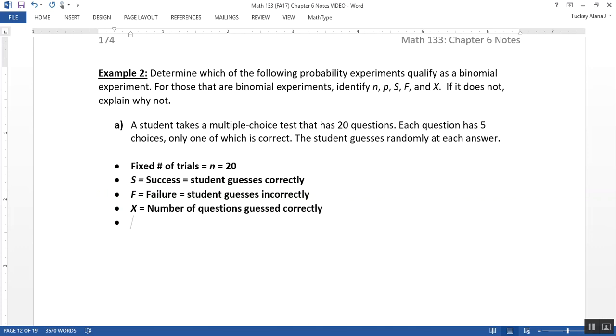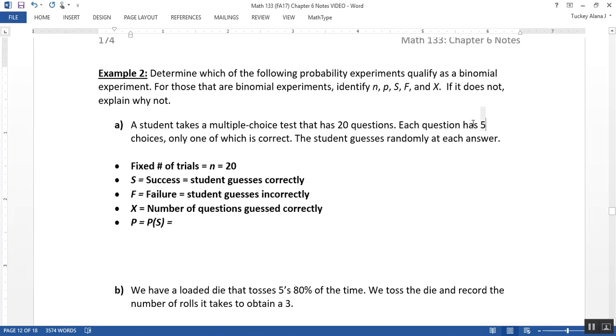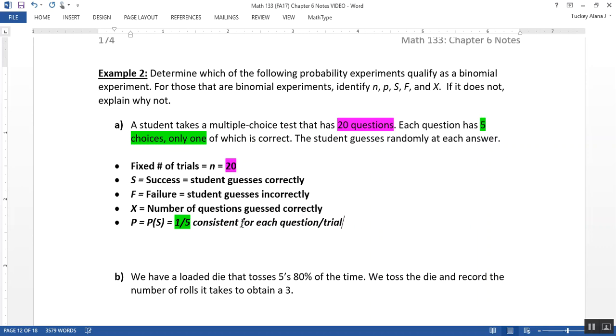So that's N, S, F, X, right? So we have our success and failure. We have our independence. We have our fixed number of trials. The only other thing we need is to know that the probability of success P, which is the probability of success, is consistent. Well, sure, it's consistent. It's consistently one out of five. See, the 20 questions is how many of the trials we're doing. So we're doing 20 trials. That's where 20 comes from, right here. But what's the probability of success on any one of those trials? Well, that would be one-fifth. One-fifth, because each question has five choices, only one of which is correct. That's where we're getting the one-fifth from. Right? So that other language determines what the probability of success is. And this is consistent for each question, right, for each trial. Each trial, each question has five options, only one of which is correct. So the probability of success is consistent for every single trial.